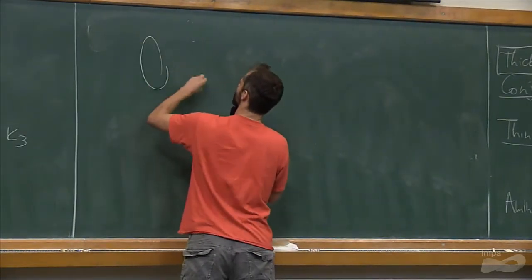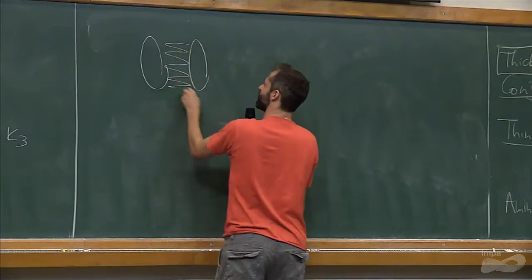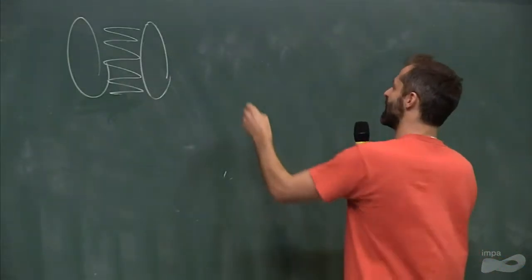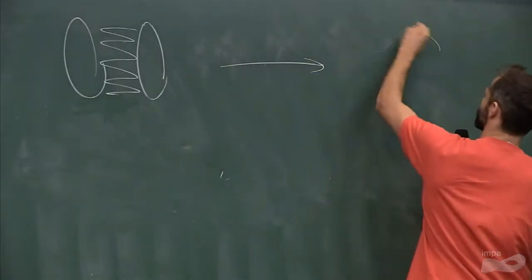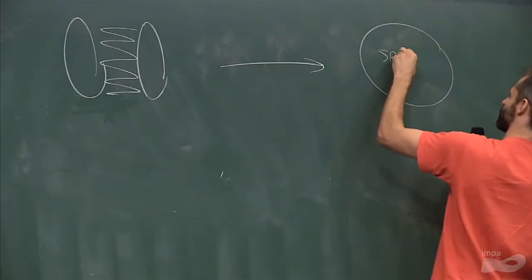So suppose you start with complete bipartite. How long does it take you to get to some sort of sparse random thing?